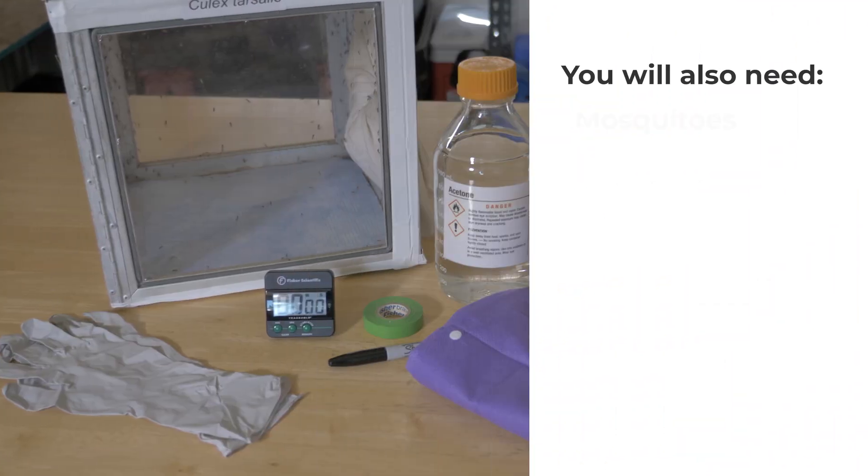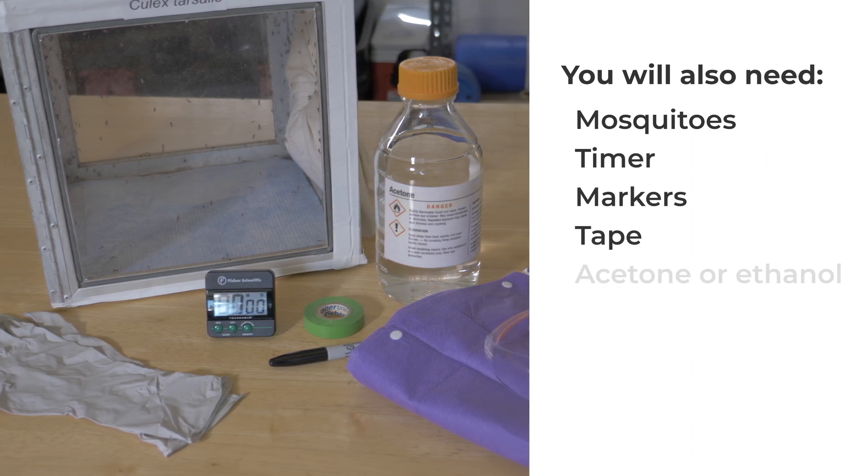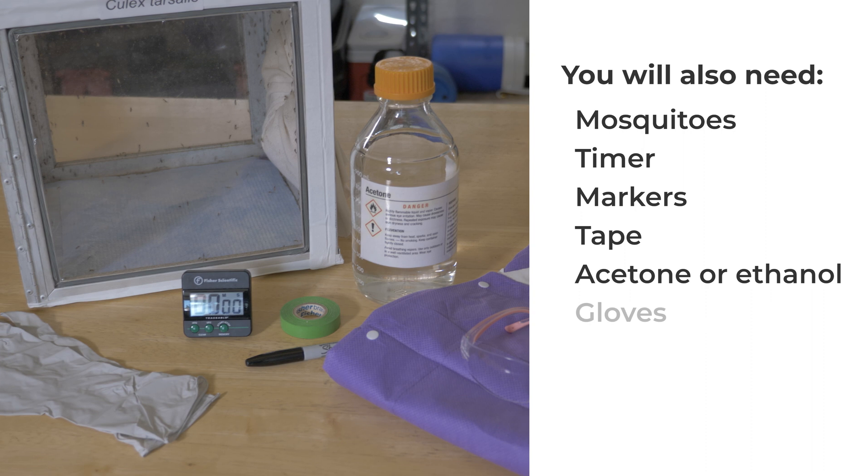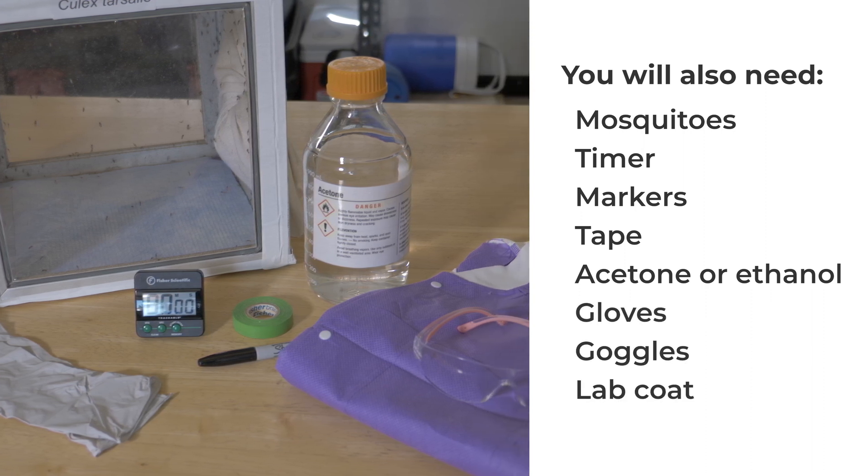Programs using CDC's Bottle Bioassay Kit will also need to supply mosquitoes for testing, a timer, markers, tape, acetone or technical grade absolute ethanol, and safety equipment such as gloves, goggles, and lab coat.